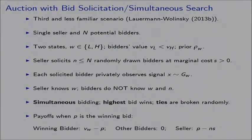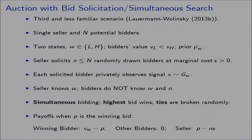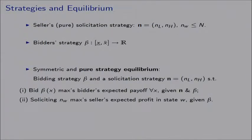Now I want to talk about the third scenario — the less familiar one, discussed in a different paper. Here you have a single seller and N potential bidders, and I restrict the discussion to just two states: W can be state L (low quality) or state H (high quality). The seller solicits N buyers randomly drawn at a marginal cost per buyer S, and the signal technology is the same. The seller knows W; the bidders do not know W or N. They bid simultaneously, the highest bidder wins, ties are broken randomly, and the winning bidder gets value minus price while the seller gets price minus sampling cost.